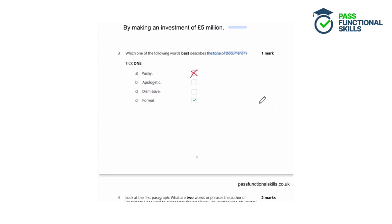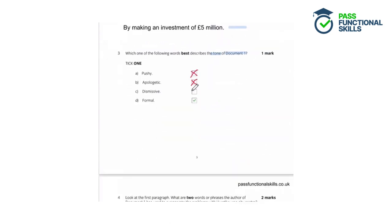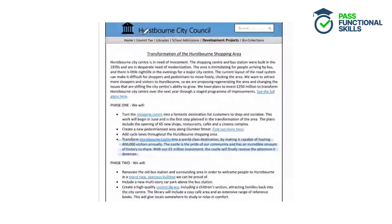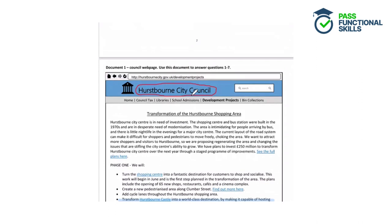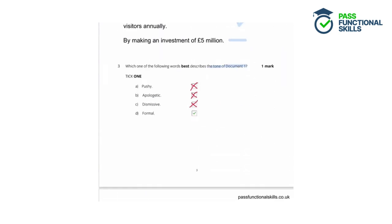Apologetic means saying sorry for something, and the document doesn't apologise at all. Dismissive suggests you don't care about other people's ideas, and we don't have that here — it's just a description of planned work. Finally, formal: this is definitely a formal document. It has been written by Hurstbourne City Council, an official source, it's part of a government website, it uses formal language throughout with no contractions like can't or won't, and it's written in standard English with no slang. So the correct answer is D, formal.